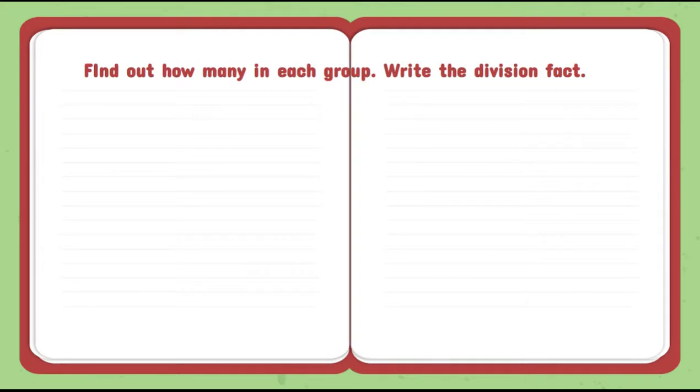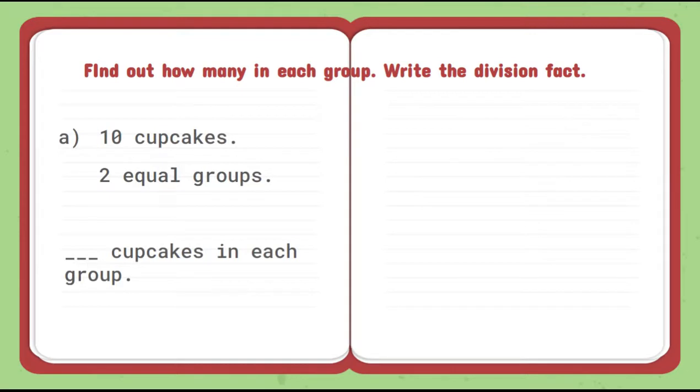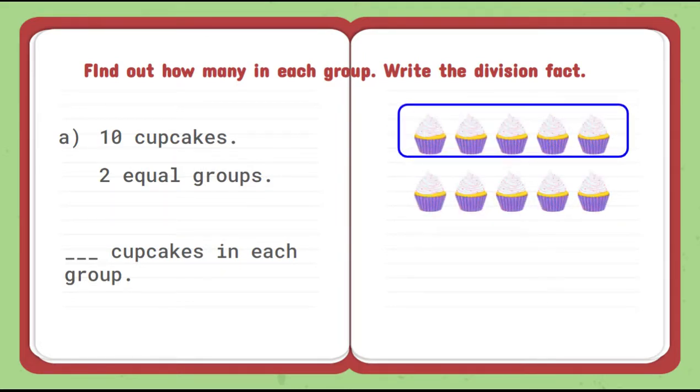Find out how many in each group. Write the division fact. The example is 10 cupcakes, 2 equal groups. So we have to make 2 equal groups of 10 cupcakes. Let's take 10 cupcakes and make 2 groups. We can see that 5 cupcakes in each group.